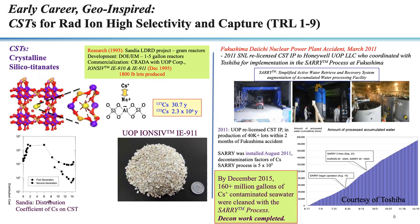Nuclear waste cleanup in the United States is very determined by the politics of Washington, so the work went dormant — until unfortunately the Fukushima Daiichi nuclear power plant blew up in March 2011. About two weeks later, I received a call from the Secretary of Energy. I worked closely with UOP to have them relicense the material, and within two months of the accident, 40,000-pound lots were being reproduced. They were inserted in the SARRY process developed by Toshiba. By August 2011 the materials were in the process, and by December 2015, 160 million gallons of cesium-contaminated seawater were cleaned from the reactor buildings.